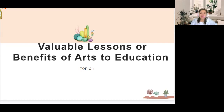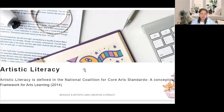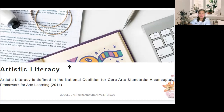For us to understand deeply the arts in education, here are the definitions of artistic literacy. Artistic literacy is defined in the National Coalition for Core Arts Standards, A Conceptual Framework for Arts Learning 2014, as the knowledge and understanding required to participate authentically in the arts. While individuals can learn dance, media, music, theater, and visual arts through reading print text, artistic literacy requires that they are engaged in artistic creation processes directly through the use of materials.